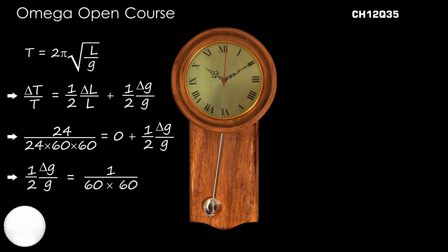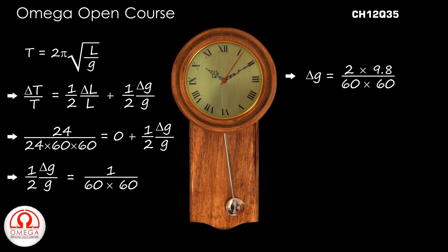Thus (1/2)(Δg/g) = 1/(60×60), or Δg = 2×9.8/(60×60). Simplifying, we get 0.0054 meter per second square.